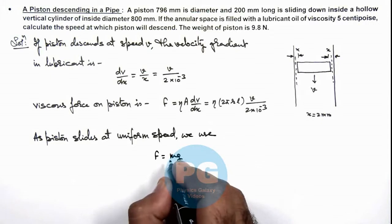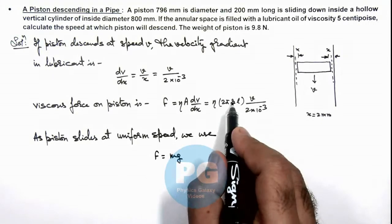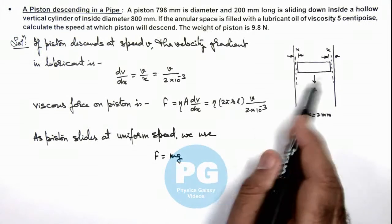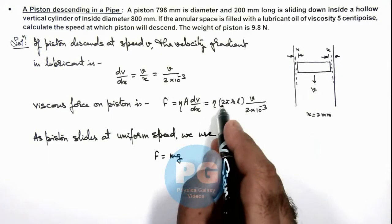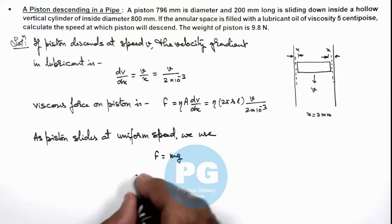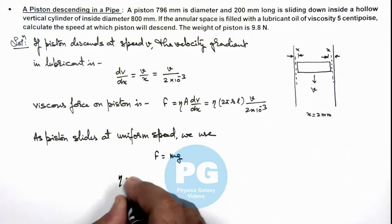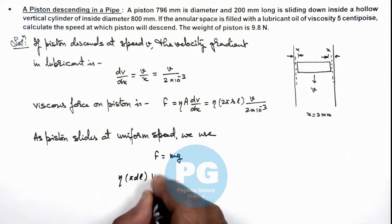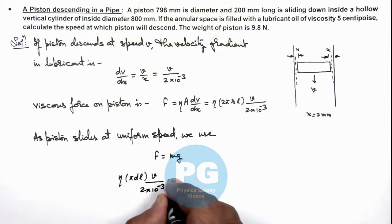So if we substitute the value here, diameter of piston is given as d, so 2r we replace by d, so this gives eta pi d l multiplied by v by 2 into 10 to power minus 3 should be equal to mg.